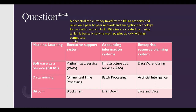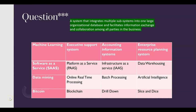What else do you need to know about Bitcoin? It's a decentralized currency taxed by the IRS as property — the IRS doesn't tax Bitcoin as currency. When you trade Bitcoin, they tax you as though you traded property, not currency. Bitcoin relies on a peer-to-peer network and encryption technology. Bitcoins are created by mining, which is basically solving math puzzles quickly with fast computers.